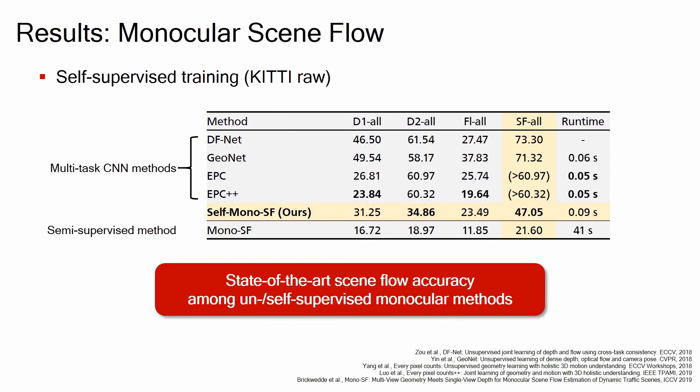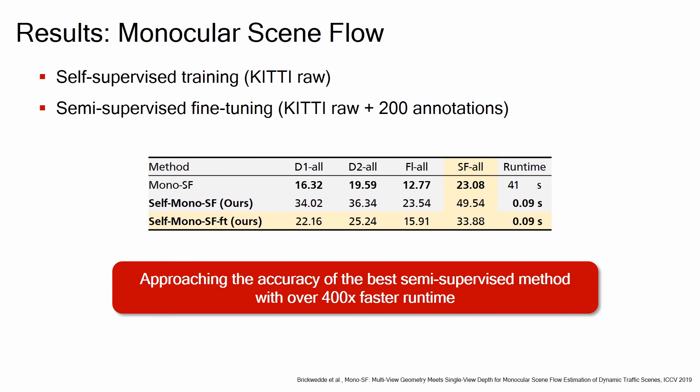For evaluation, we train our model in a self-supervised manner on the KITTI dataset. Our model achieves state-of-the-art scene flow accuracy among unsupervised or self-supervised monocular methods, outperforming them by a large margin. Especially, we achieve this significantly improved accuracy with a single CNN model with simpler and stable training. We optionally fine-tune our model in a semi-supervised manner for further accuracy gains, and our model approaches the accuracy of the best method to date but with more than 400 times faster runtime.